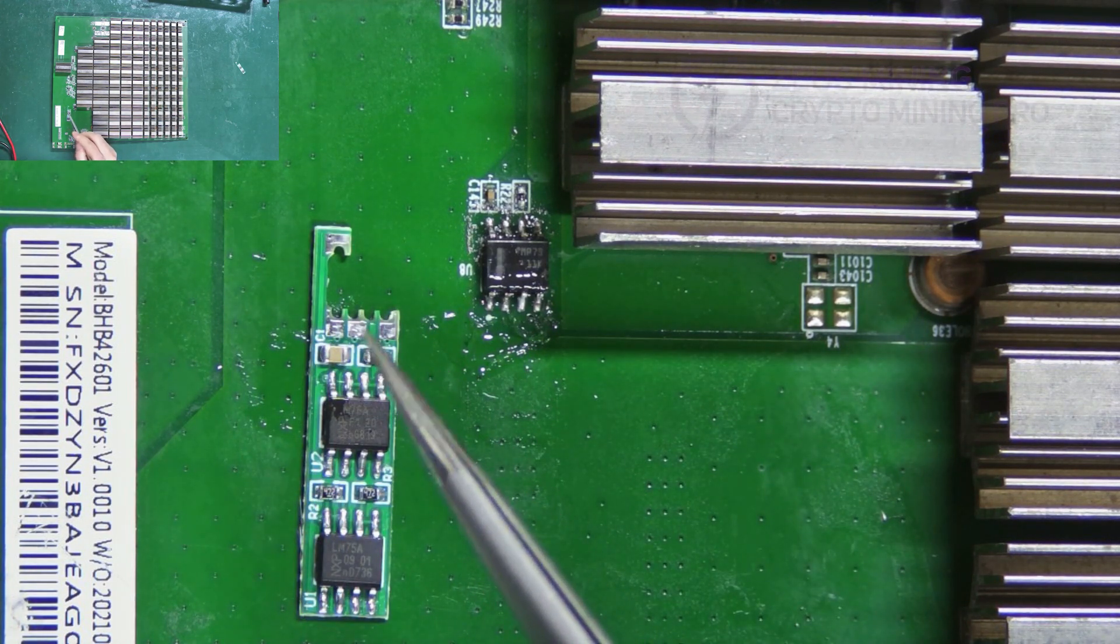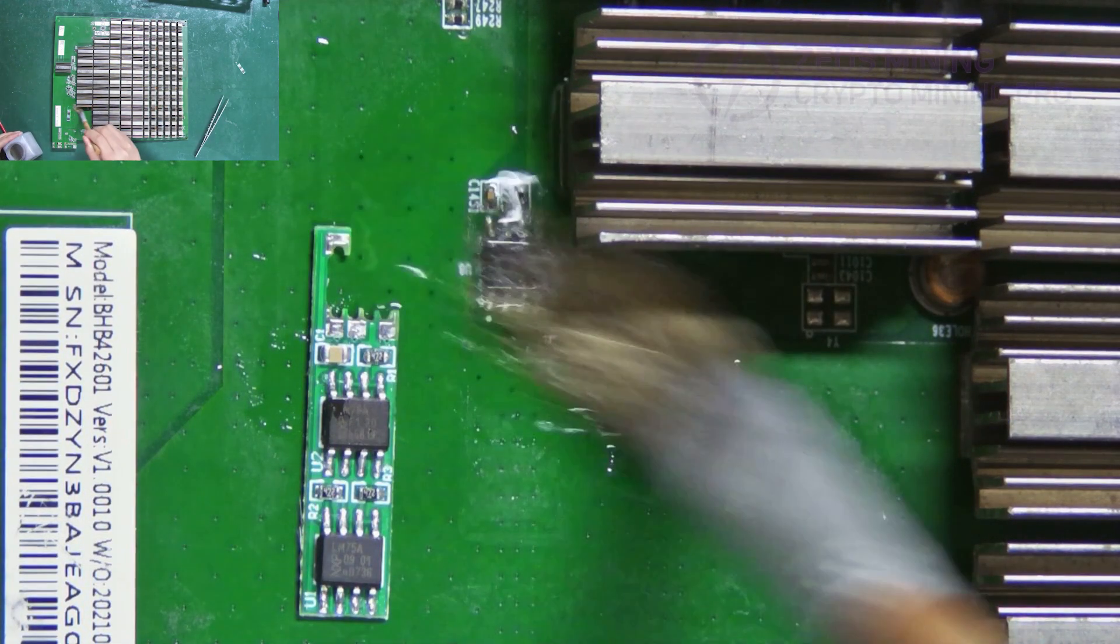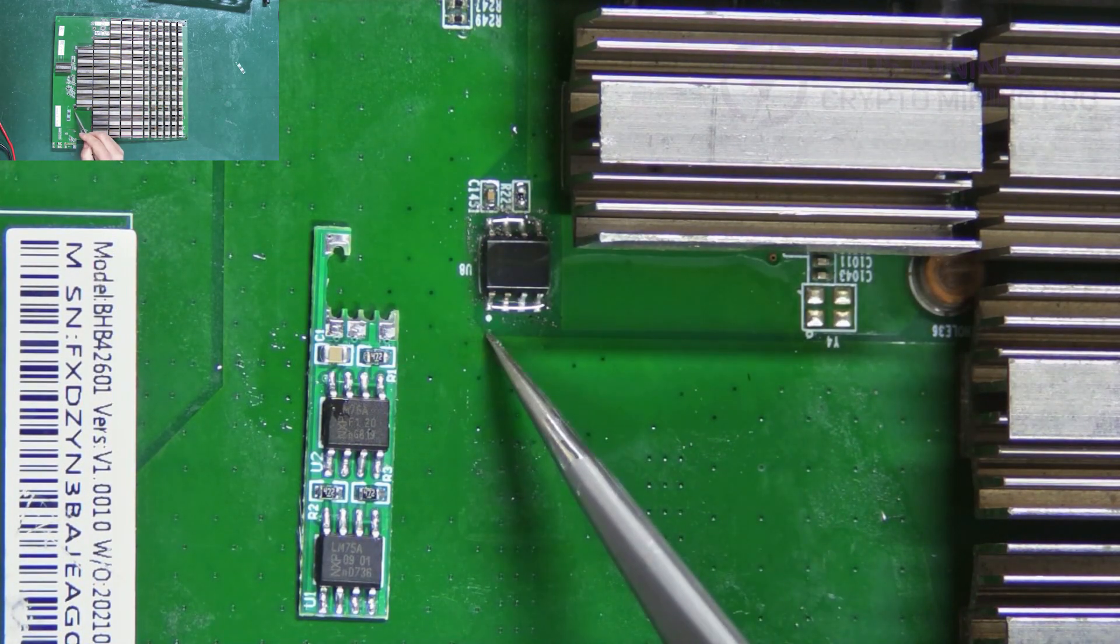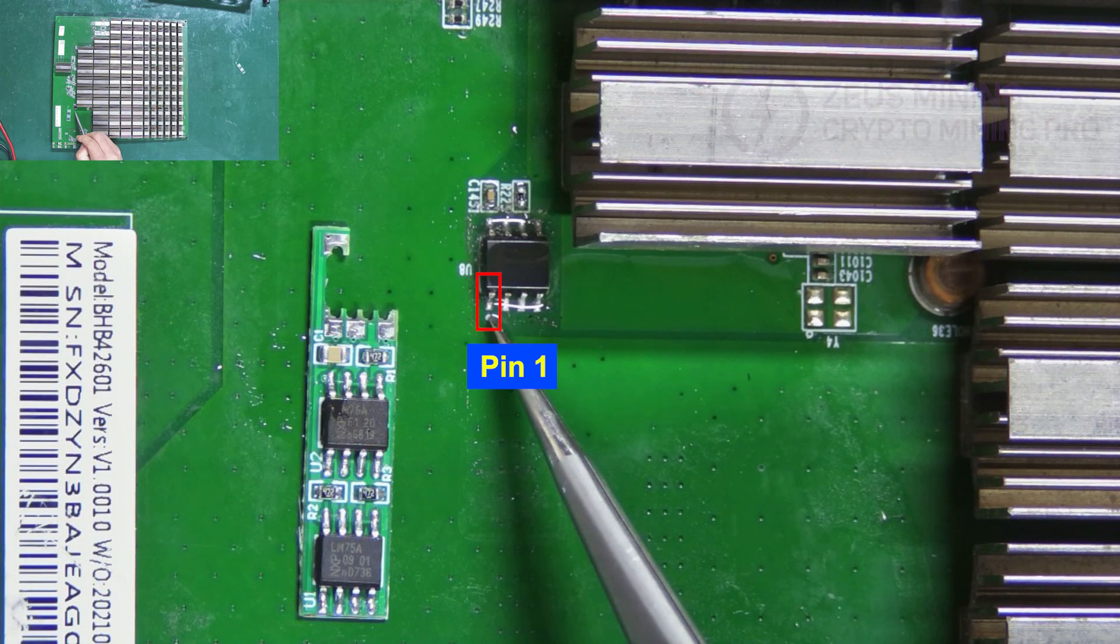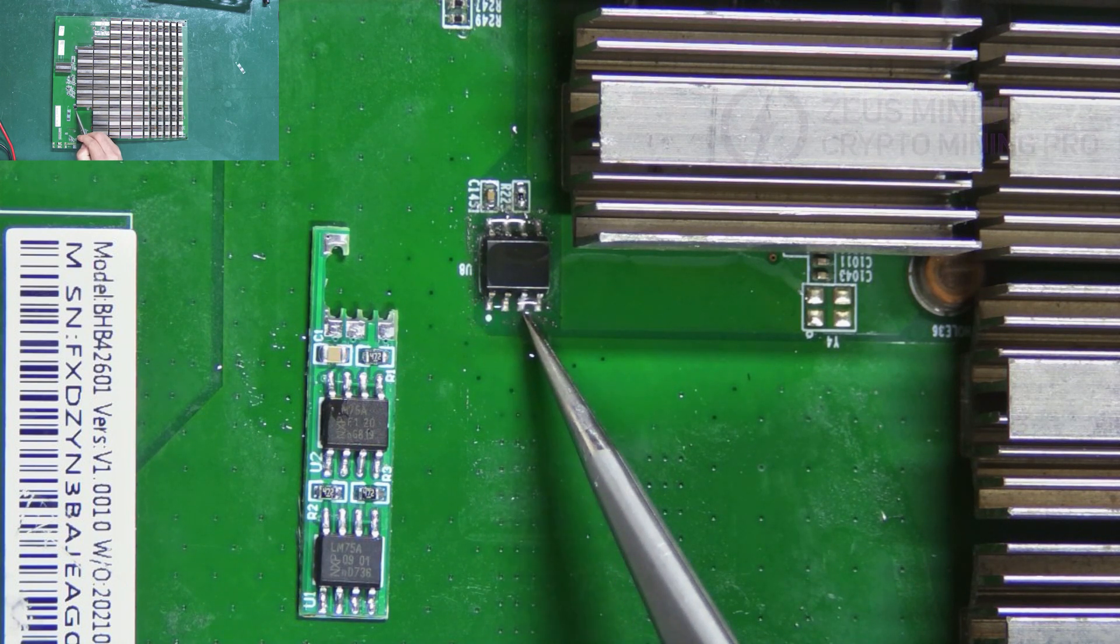The orientation can be confirmed by the pins on the hash board. The small white dot corresponds to pin 1, then pin 2, and so on up to pin 8.